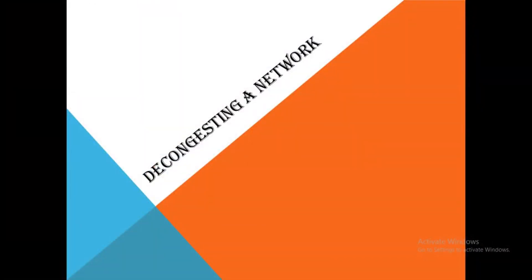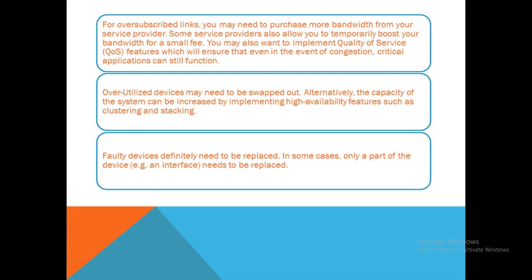So let's see how to decongest a network. For oversubscribed links, you may need to purchase more bandwidth from a service provider. Over-utilized devices may need to be swapped out. Alternatively, the capacity of the system can be increased by implementing high availability features such as clustering and stacking. Faulty devices definitely need to be replaced, and in some cases only a part of the device needs to be replaced.